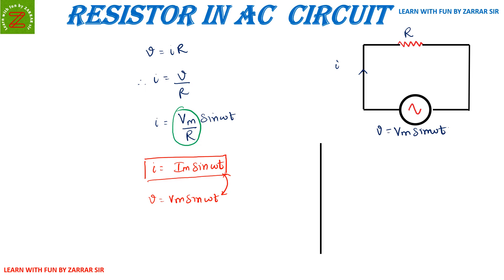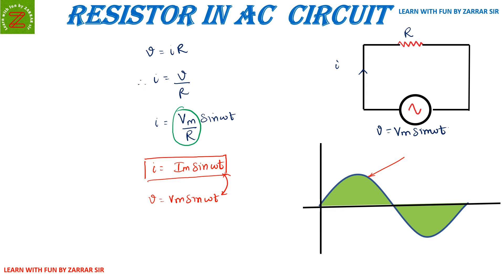Looking at the waveform on the x-y axis: the instantaneous voltage waveform is vm sine ωt, and the instantaneous current waveform is im sine ωt. Both are in phase. The amplitude of the current is less because we are dividing by resistance — whether it's 1 ohm, 100 ohm, or 1 kilo-ohm — so the current magnitude will be smaller.